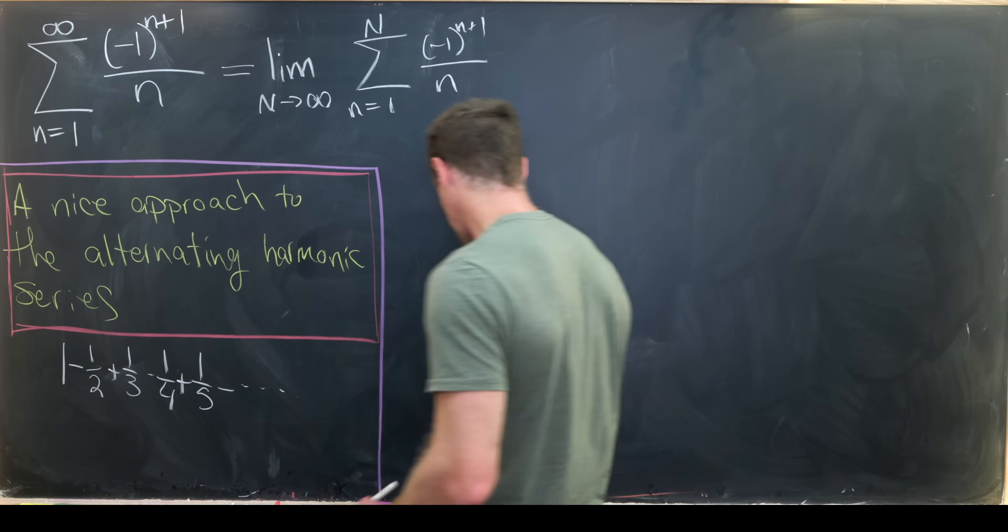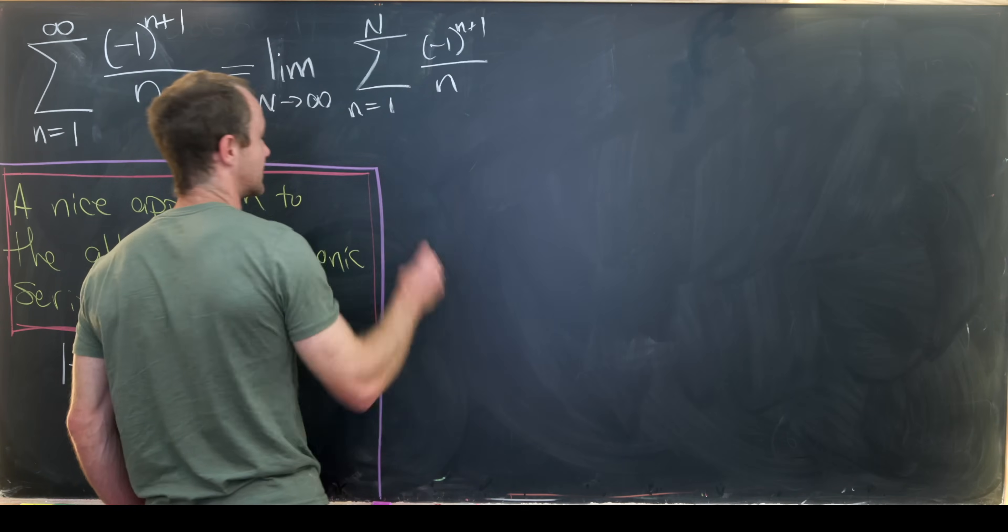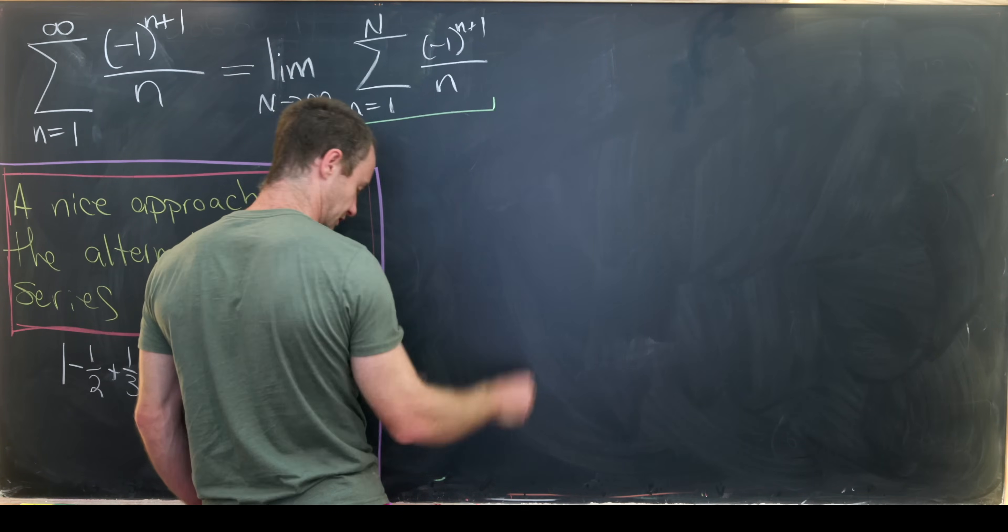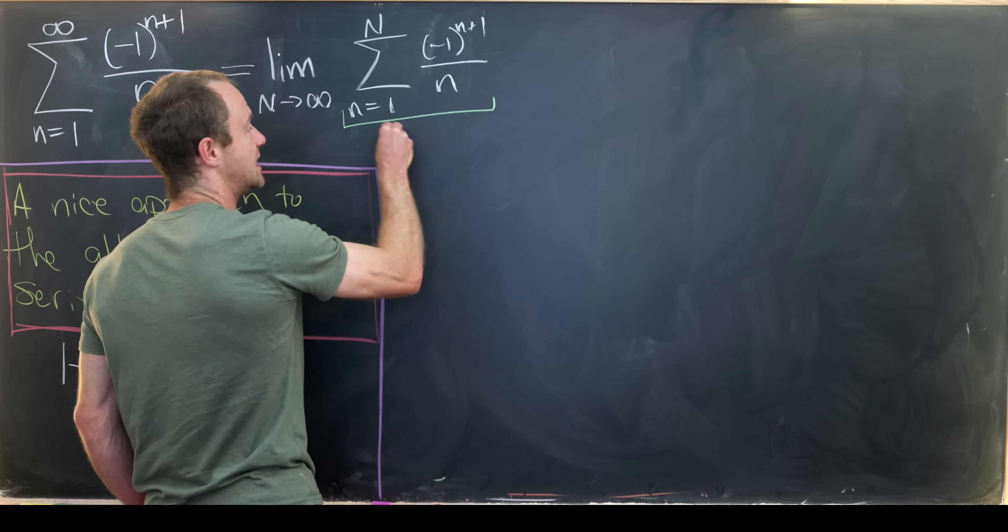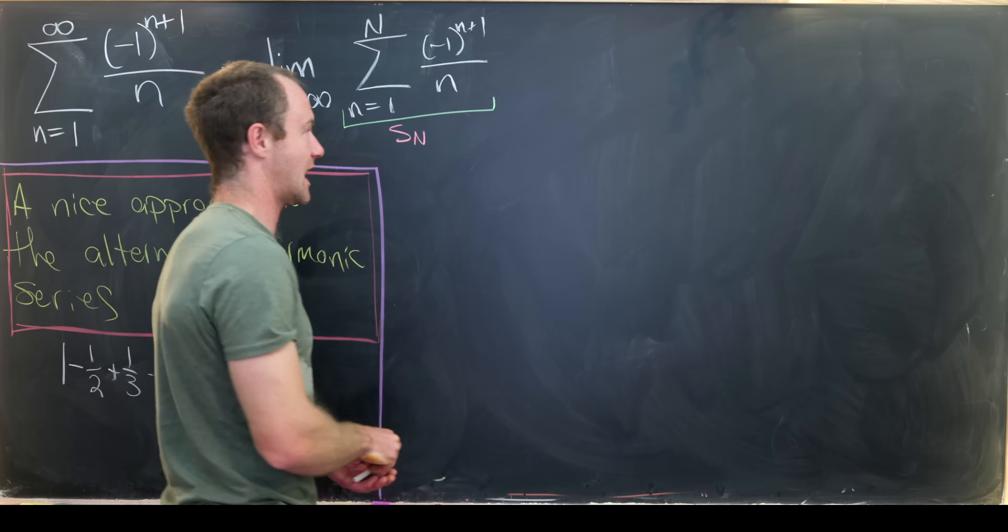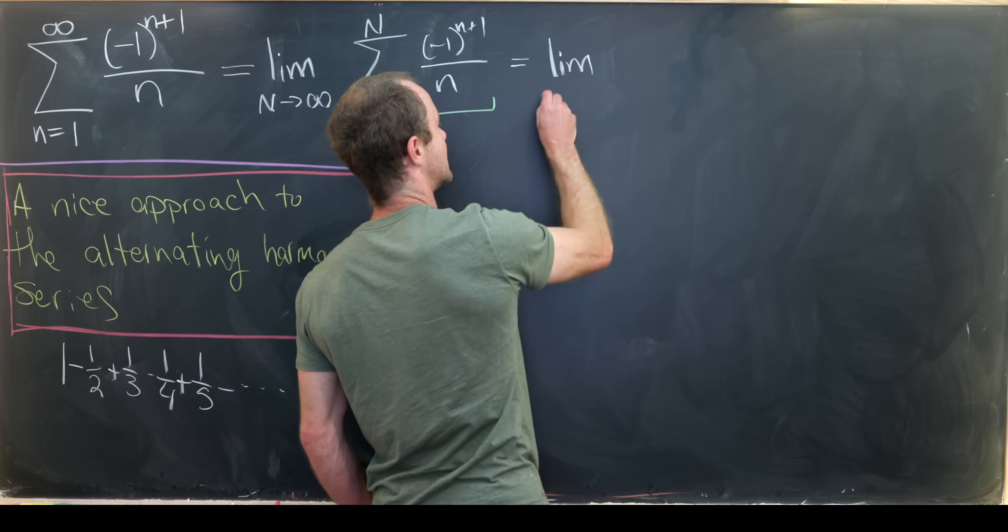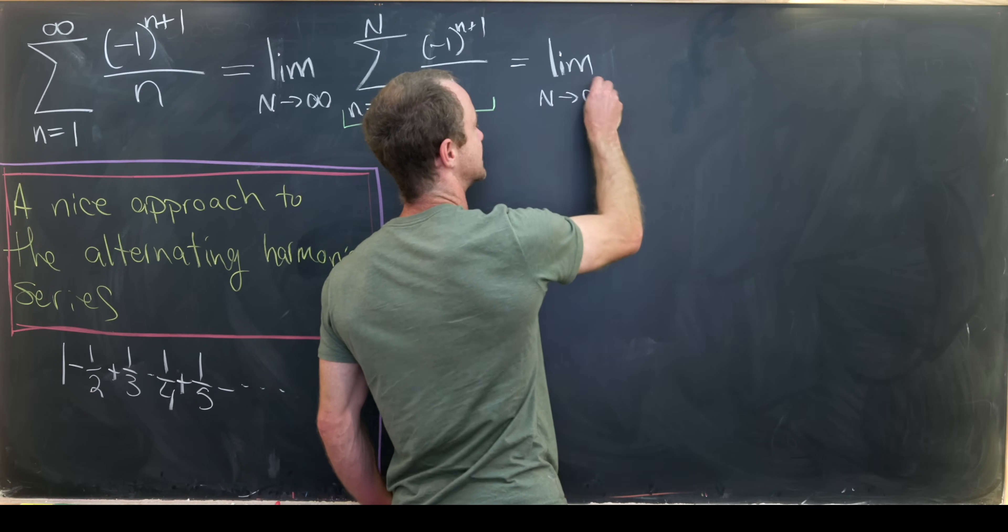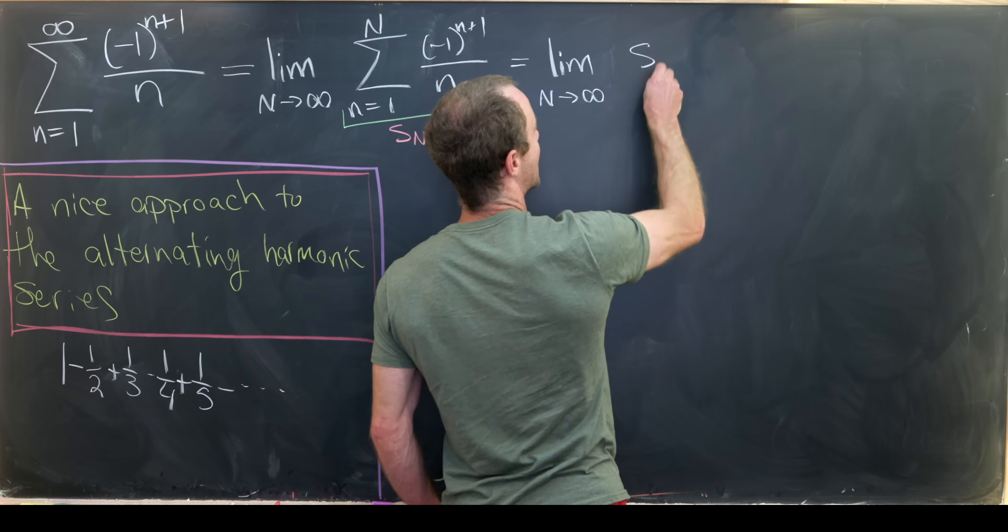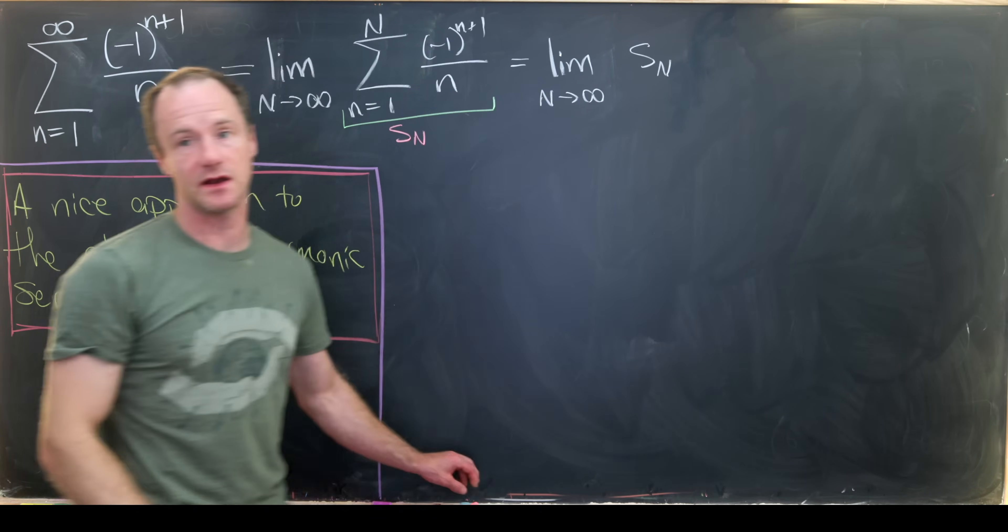Now, next up, I'm going to name these partial sums something. In fact, I'll give them kind of a standard name that you would see in a textbook, and that's S sub capital N. That means I can write this as the limit as capital N approaches infinity of S sub capital N, like that.